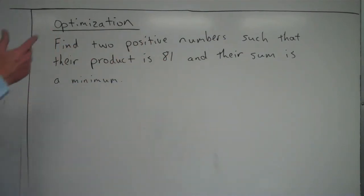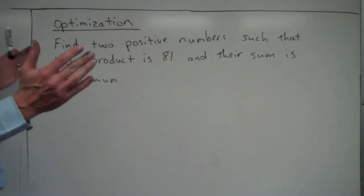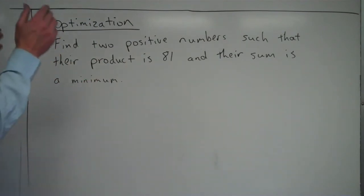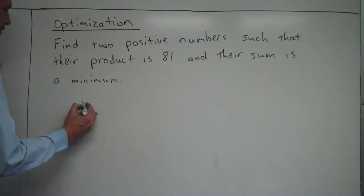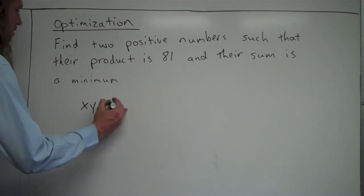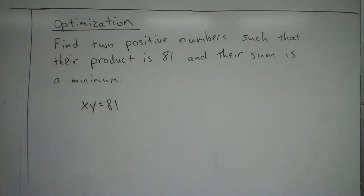So we have two numbers, how about we call them x and y. So x times y has to equal 81. So that's what I refer to as the constraint equation. x times y is equal to 81. It's got to happen. And then it says, and their sum is a minimum.